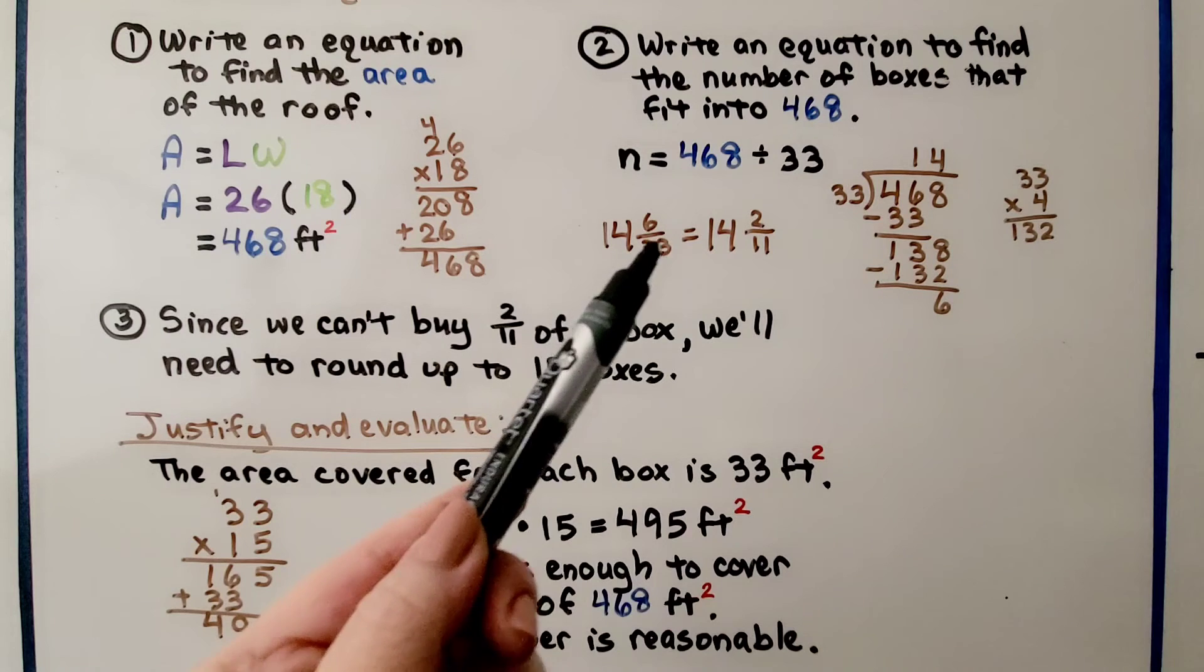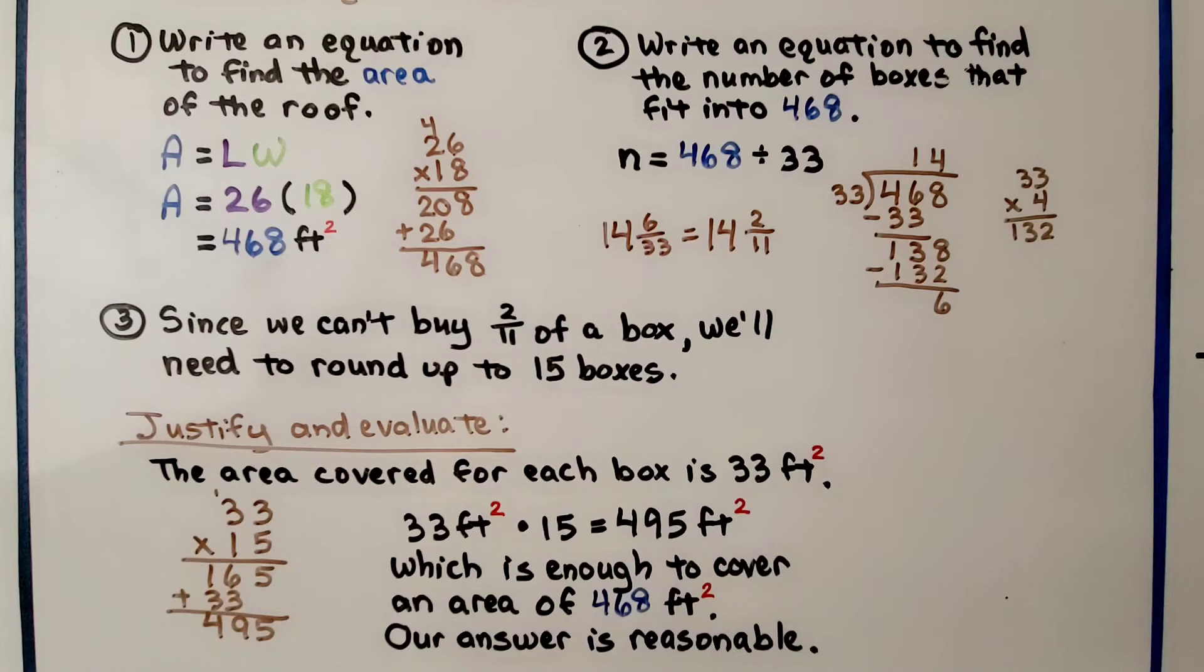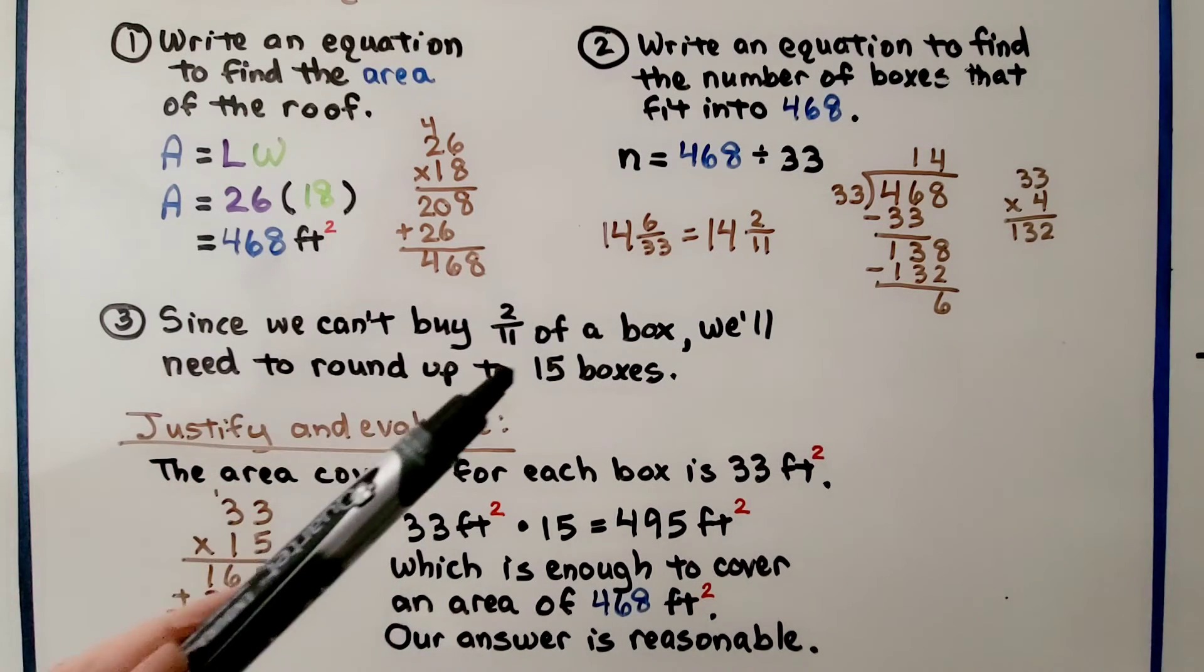We do 468 divided by 33 and we get 14 and 6/33. We can simplify that to 14 and 2/11. And since we can't buy 2/11 of a box of shingles, we'll need to round up to 15 boxes. So we'll go from 14 to the next amount of boxes, 15.